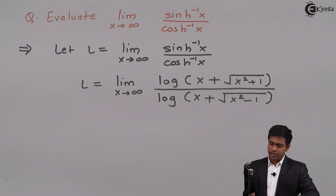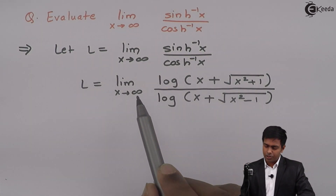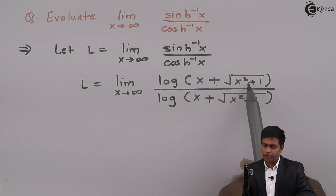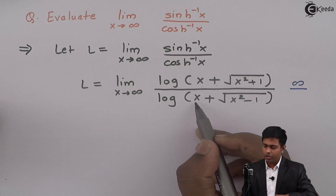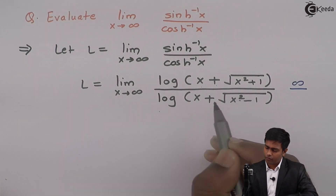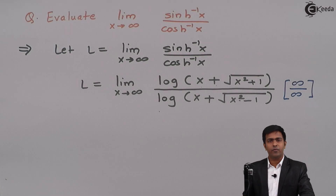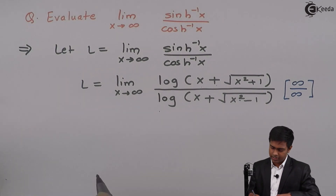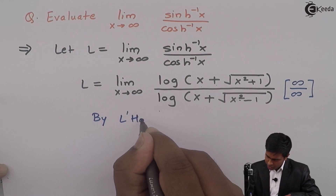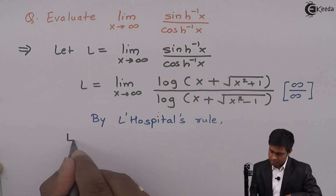Now we can check for infinity whether we are getting a finite or infinite value. By substituting x as infinity we will get infinity plus infinity, and log of infinity is infinity, meaning we get infinity in the numerator. Similarly in the denominator we get infinity plus infinity, log of infinity is also infinity — we are getting infinity upon infinity, which is an indeterminate form. Whenever we get an indeterminate form we apply L'Hôpital's rule to find the finite value of the limit.